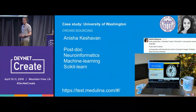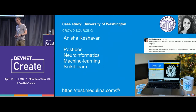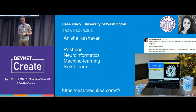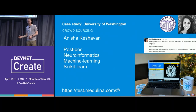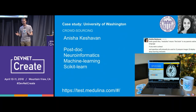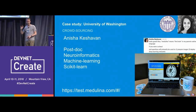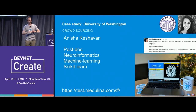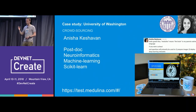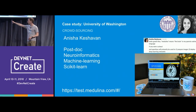Anisha Kashavin from the University of Washington is a postdoc and data scientist. She's crowdsourcing segmentation on medical images — getting people to outline lesions on medical images to collect data and train a model that can then be used to save lives in the field. You can try it out at testmegelina.com.